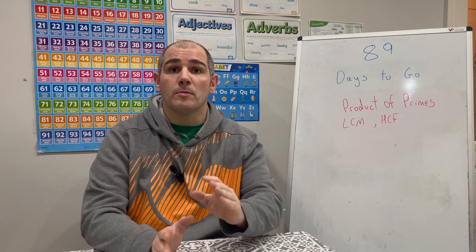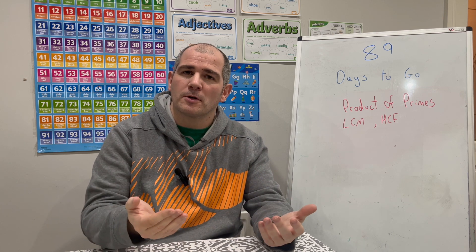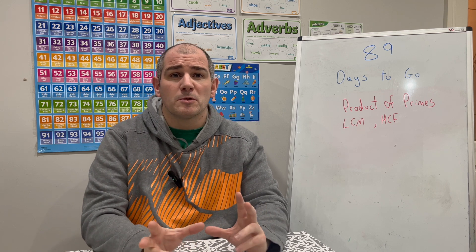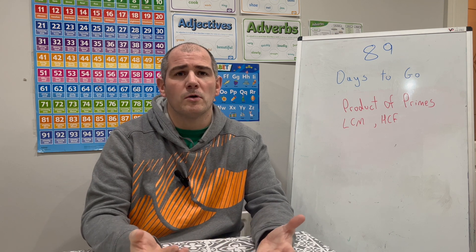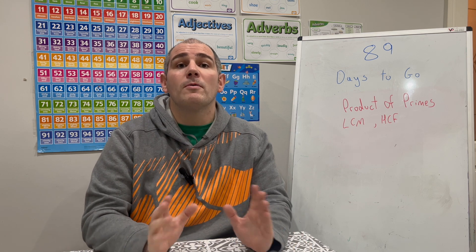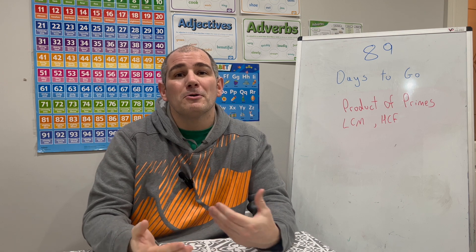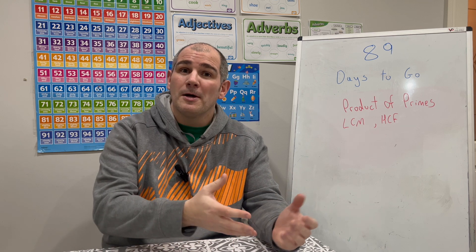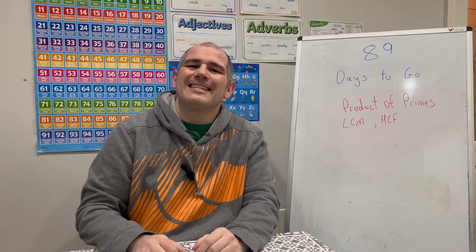In this video we've looked at how to write numbers as a product of primes and how to use that to find the lowest common multiple and highest common factor. I highly recommend the practice questions in the description below, as they'll be useful for product of primes, LCM, and HCF. I hope you found this video useful — please like it and subscribe to the YouTube channel. Thanks so much, bye!